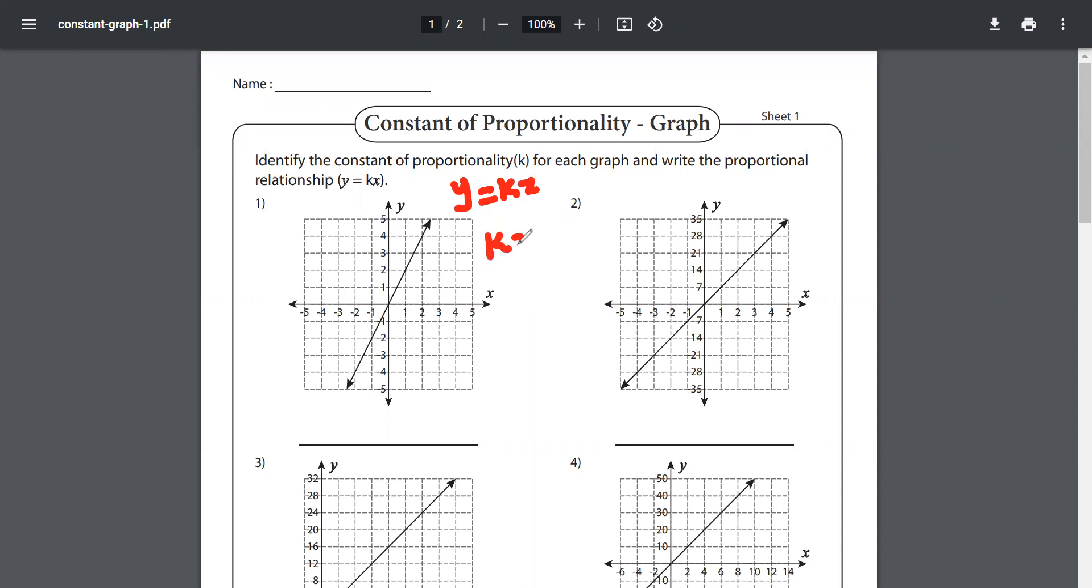K is equal to y upon x. Okay, now notice one thing that if I look at this, this is 2 and this is 1. X is 1, y is 2. Can I write k is equal to 2 upon 1? So k is equal to 2, that is the constant of proportionality.